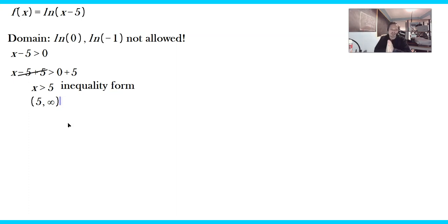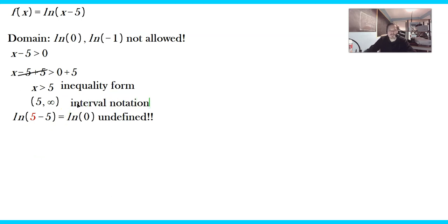Any value beginning at 5 going towards infinity works, but not 5 itself. Why? Because ln of 5 minus 5 is ln of 0, which is undefined. So 5 cannot be used as an input. That's the domain in interval notation.